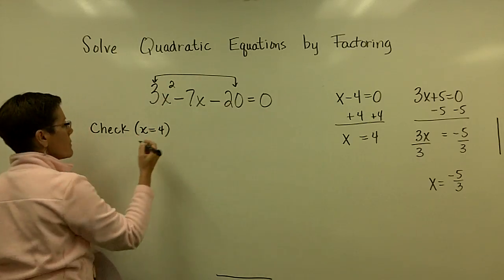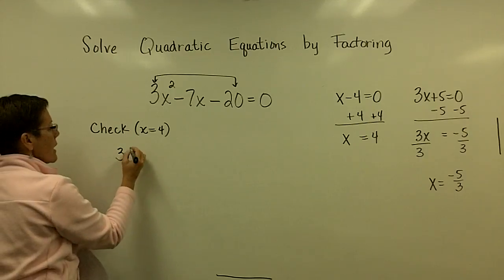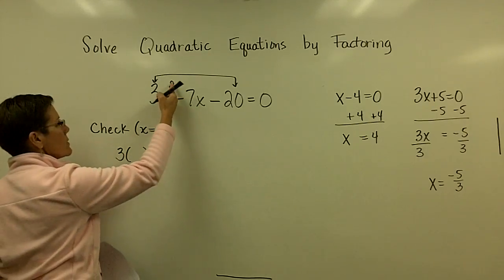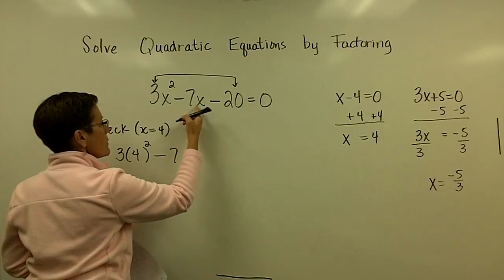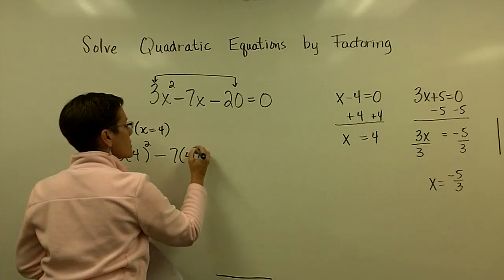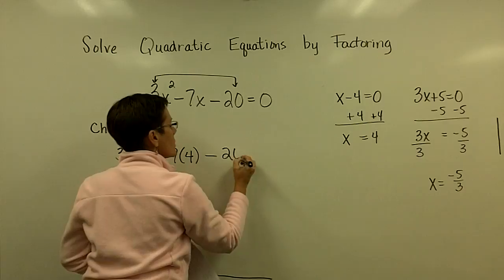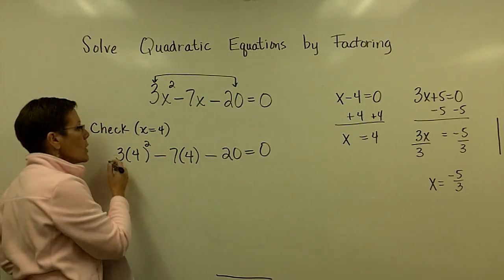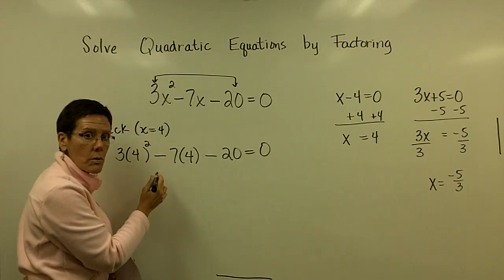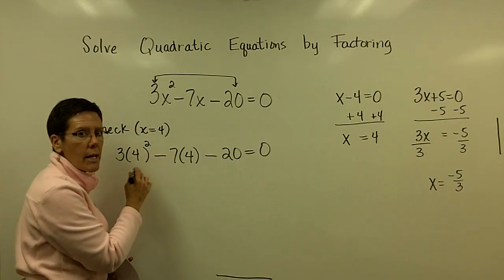I'm going to check x equals 4. So in this problem, I'll have 3 times x squared, so 4 squared, minus 7 times whatever x is, x is 4, minus the 20. And I want to see if I get a true statement once I've checked this out. Order of operations says to do the exponents first. Not 3 times 4, do 4 squared, which is 16.